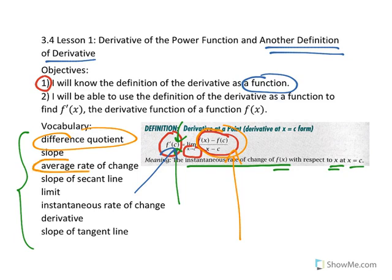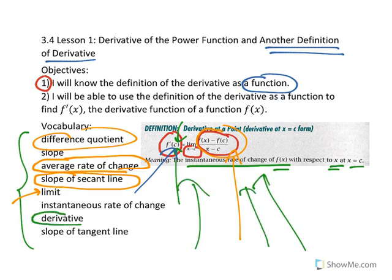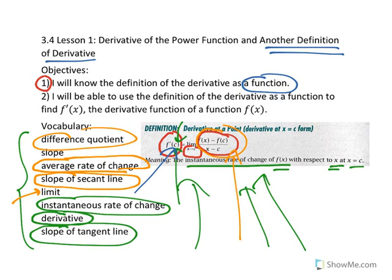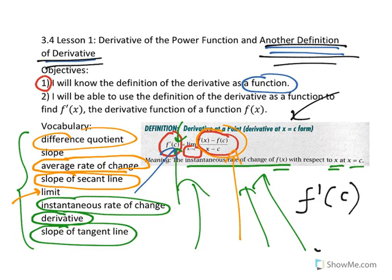But it gives the same information — the slope of the secant line passing through two points, an average rate of change in the context of a word problem. And when we take the limit of that difference quotient, we will get what we call the derivative, which gives us an instantaneous rate of change and the slope of the tangent line at a particular point. The difference is that when we look at this other definition and do the limit, instead of finding f prime at a particular x value, we're going to get a function of x — the derivative as a function — so you can substitute any value for x without repeating the limit process.